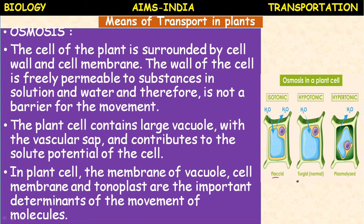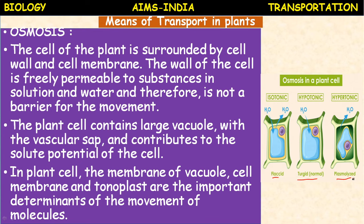In isotonic condition, the concentration in the internal vacuolar sap and outside the cell is the same - this is called the flaccid condition. The turgid condition is the normal condition. Flaccid condition means dry condition. In hypotonic condition, the concentration is low compared to external environment. In hypertonic condition, when concentration inside the vacuolar sap is more compared to external environment, all water present in the cell goes out to maintain osmotic balance and the cell becomes plasmolyzed - shrinkage occurs.